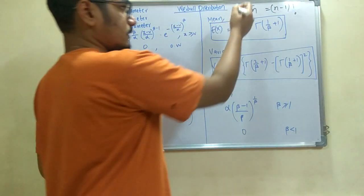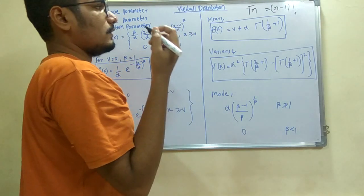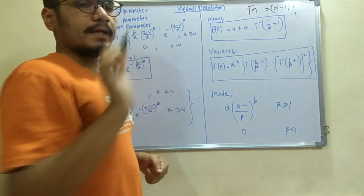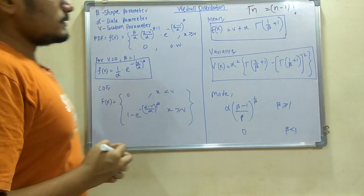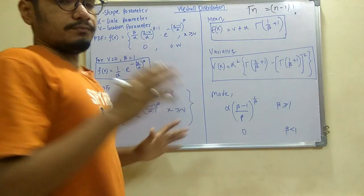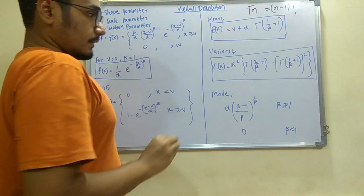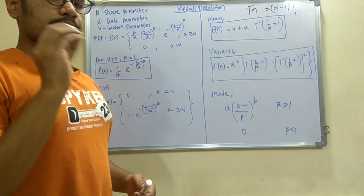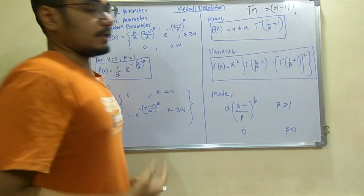So whenever in a problem you encounter this gamma or gamma of some value, then you will be evaluating in this manner, that is (n minus 1) factorial. Next we have the variance V(X) which equals alpha squared multiplied by gamma of (2 divided by beta plus 1) minus gamma of (1 by beta plus 1), this expression raised to 2 and multiplied by alpha squared. So that gives you the variance for variable distribution.